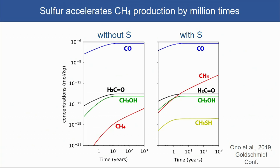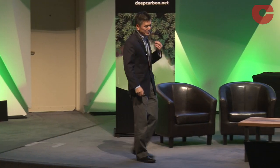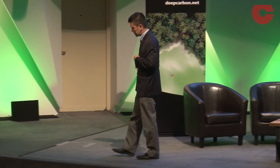One interesting prediction from the model is that sulfur accelerates the rate of the Sabatier reaction because of the HS radical — about one million times faster if you have sulfur in your system. For isotopolog exchange, we can also predict that the isotopolog exchange reaction is catalyzed by radicals, and it takes about 10 years to exchange this isotopolog at 700 Kelvin.